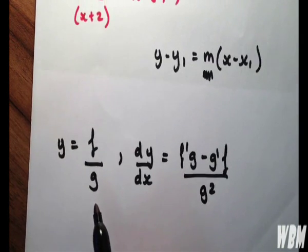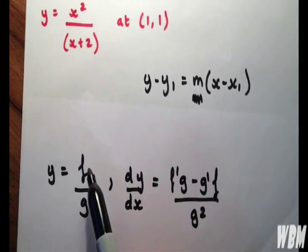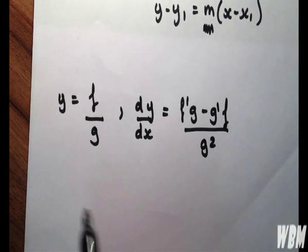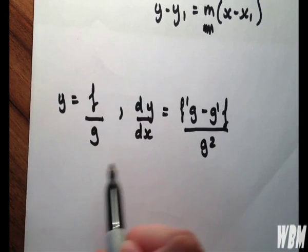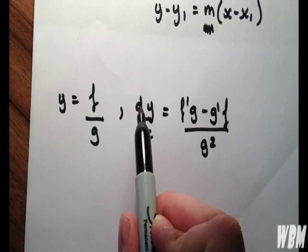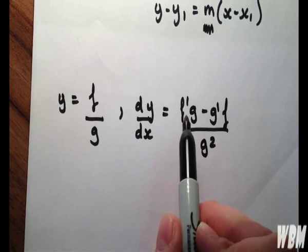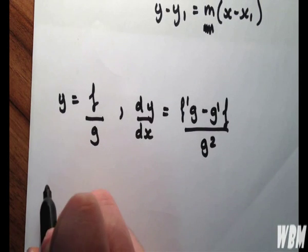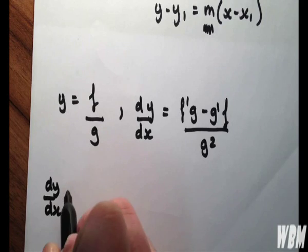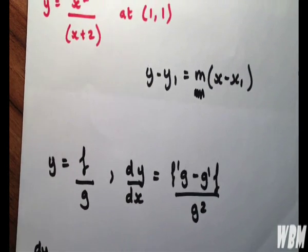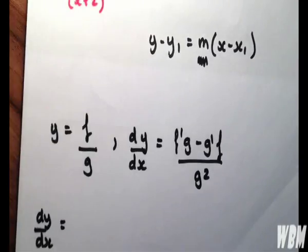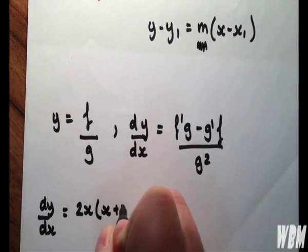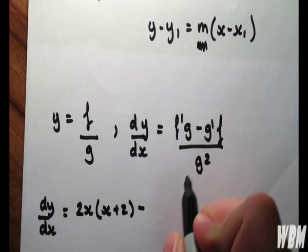Now, if we have f dash, and the f here is equal to x squared, then we have 2x. Now, to avoid confusion, I won't be calling this function of x, because we already have an f in the working, so I'll call it dy dx. So we have 2x times by g, which is x plus 2,